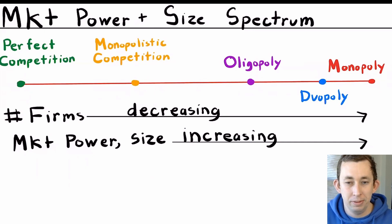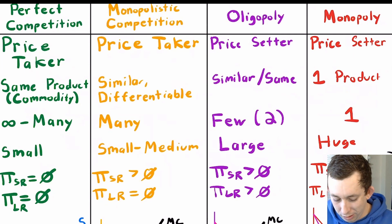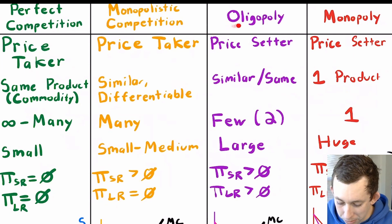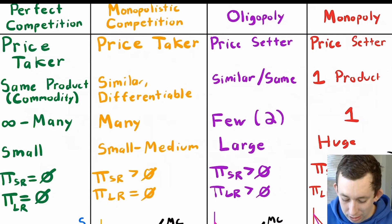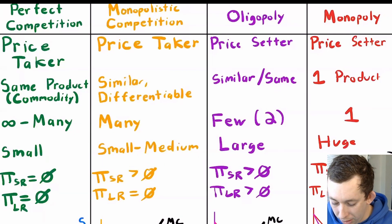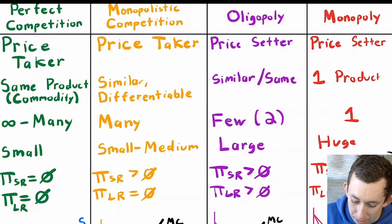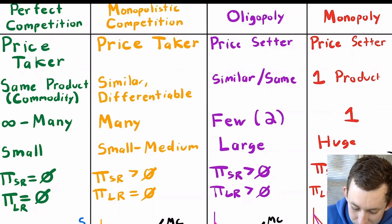In perfect competition the firm has zero market power, then some, then a lot, then infinite market power. Now let's talk about the different characteristics. Here is my main matrix for comparing these different types of market structures. In terms of whether firms are price takers or setters, firms are only price setters in an oligopoly or monopoly market because they have market power.